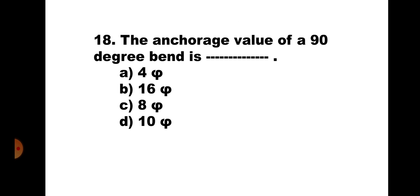Question 18. The anchorage value of a 90-degree bend is: A. 4φ, B. 16φ, C. 8φ, and D. 10φ. The anchorage value is taken as 4φ for every 45-degree bend. Since it is a 90-degree bend, 4φ × 2 = 8φ is the correct answer. Hence, the correct answer is C. 8φ.